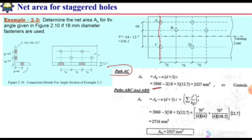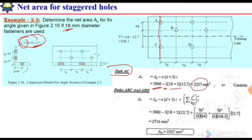For path AC, the gross area of the angle section is 3060 square millimeters, taken from the LRFD manual. We subtract the area of two holes, each calculated as the bolt diameter 18 mm plus 3 mm, multiplied by the plate thickness of 12.7 mm. The net area for path AC comes out to be 2527 square millimeters.